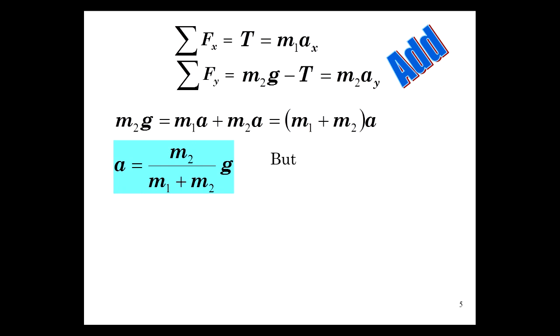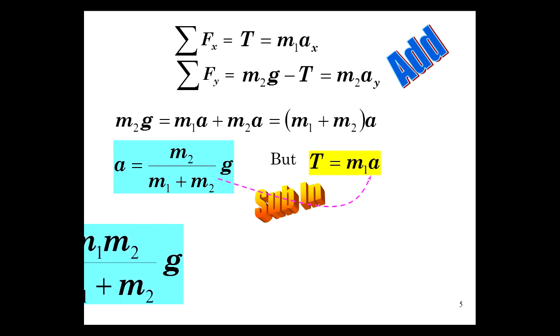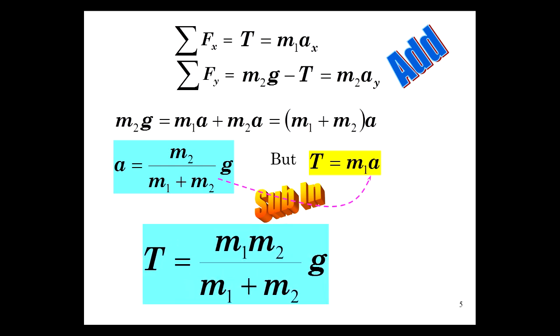Now the tension would follow suit. You have the acceleration, and then the tension is going to act against gravity for the spider. Since you have the acceleration, you can solve for the tension. Let's finish this problem. T is m1a, so let's substitute that acceleration in for a. And there's the wonderful result.